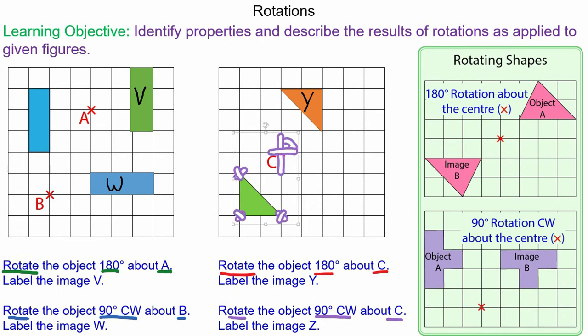And we're going to rotate it all by 90 degrees clockwise, line up the center again, and redraw the image which we will label Z.